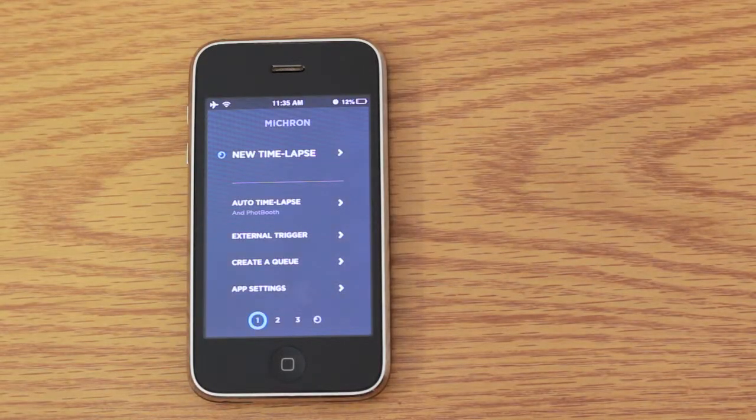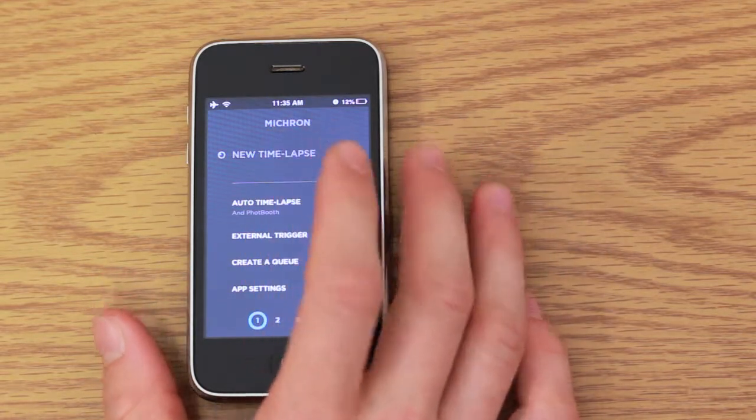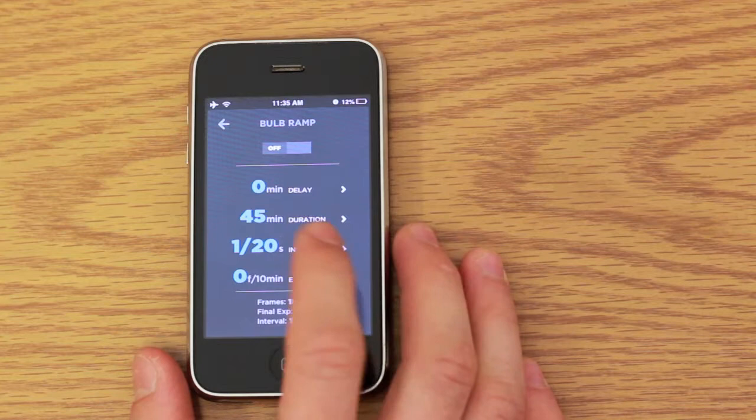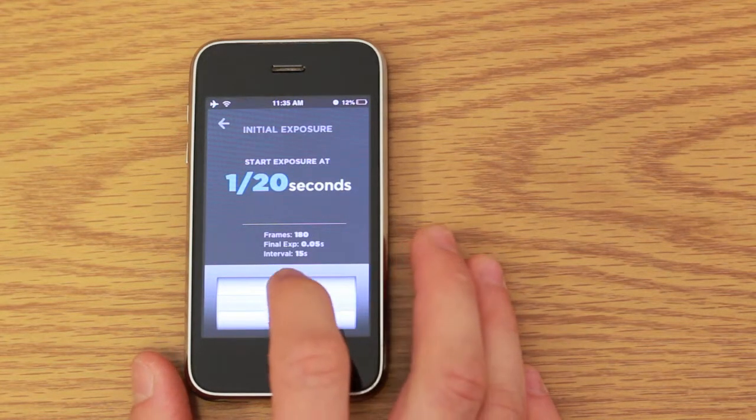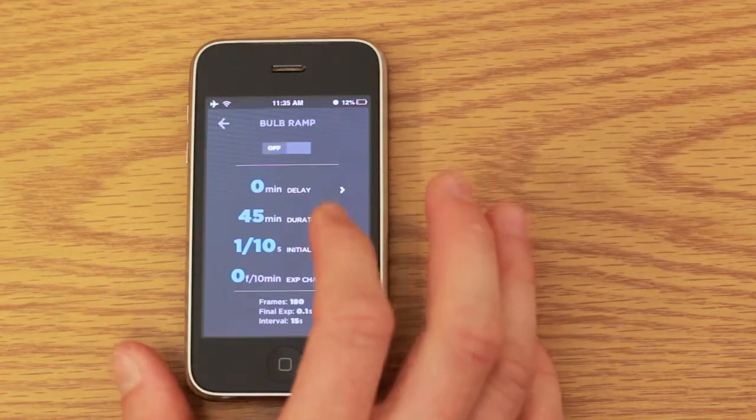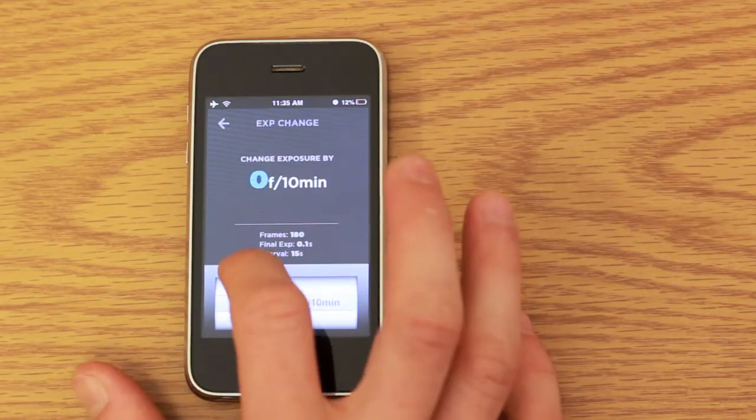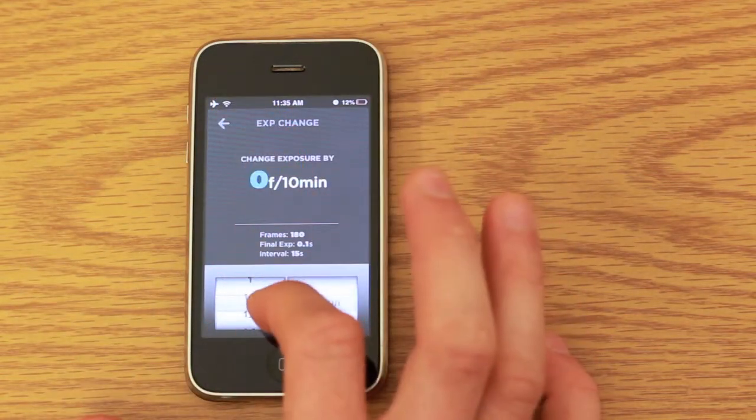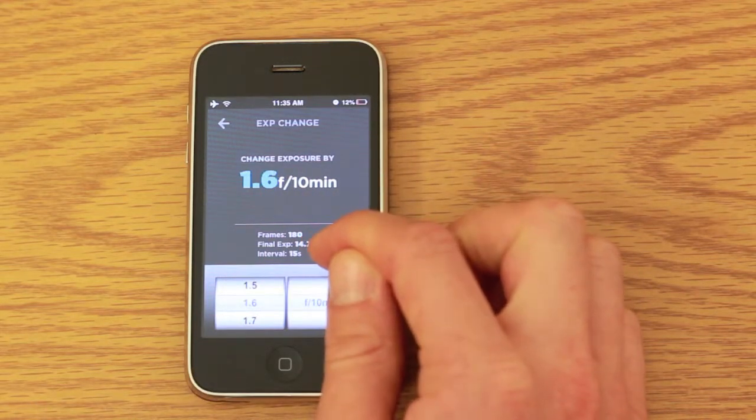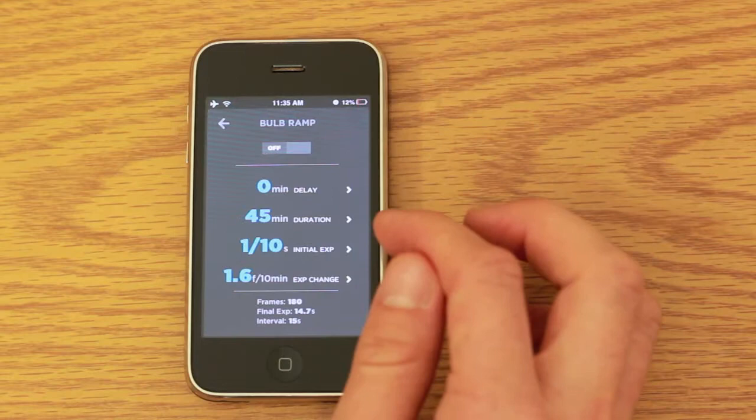Once I have my starting and final settings, I can go into the app and input my data. Now I go into bulb ramping, and I want my initial exposure to be 1/10th of a second. And I want my final exposure to be as close as it can be to 15 seconds, so in this case that's going to be 1.6 f-stops per 10 minutes. You see that's pretty close to 15 seconds.